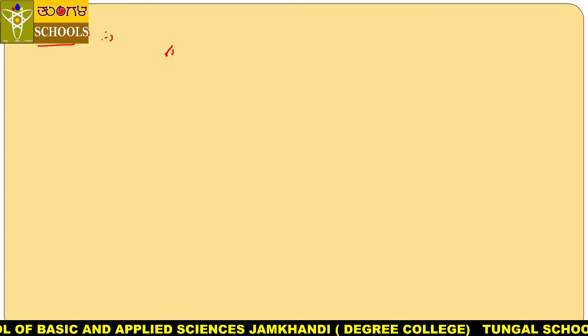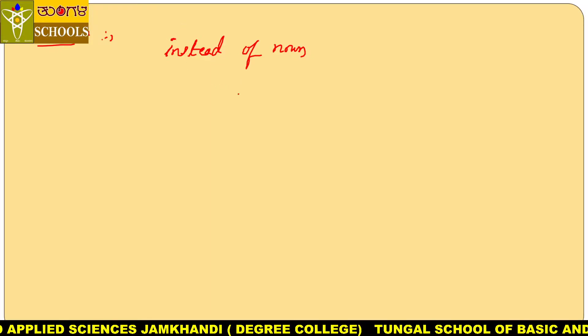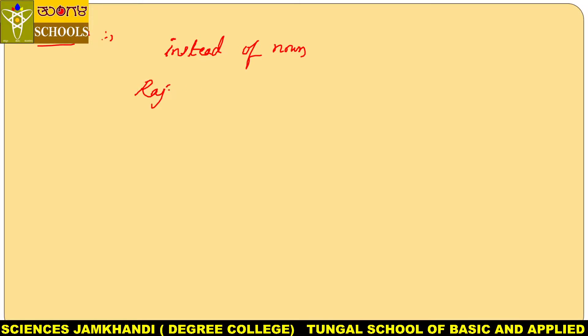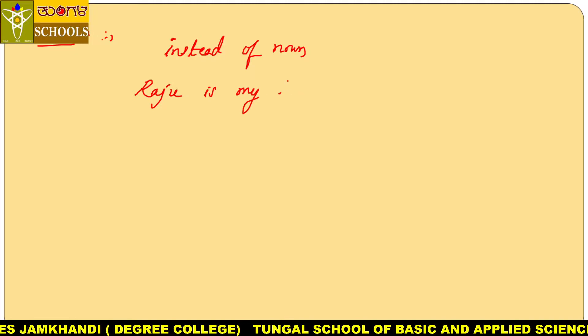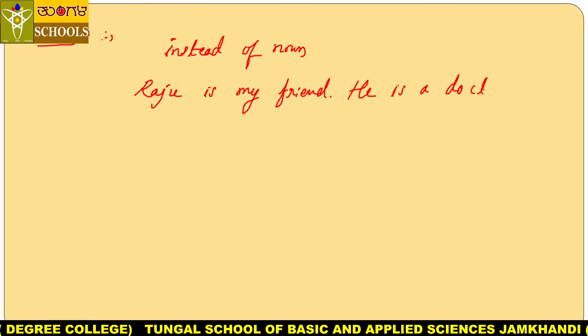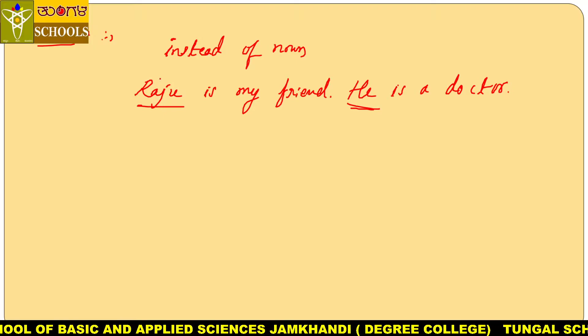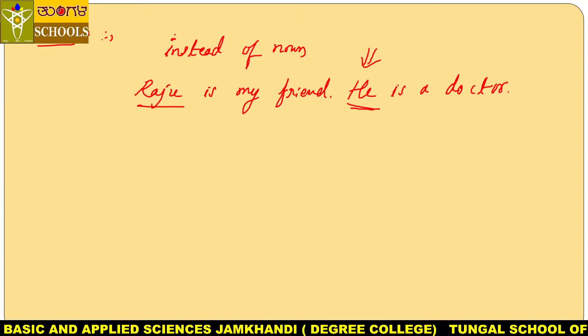Pronoun is nothing but a word which is used instead of a noun. The word used in the place of a noun is called a pronoun. For example: 'Raju is my friend. He is a doctor.' Here, 'Raju' is the person mentioned by name, but in the second sentence we use 'He' in place of his name. So 'he' is a pronoun.